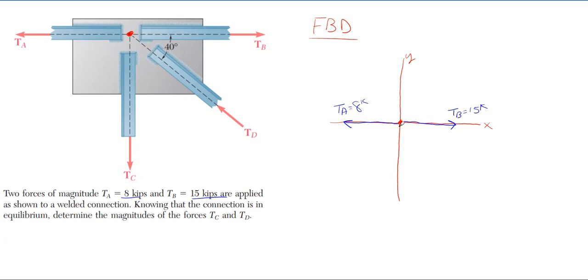Then we have our unknown TC, which is pointed directly downward along the y. And then we have TD, which is pointed up and to the left here. TD is unknown, and we have a 40 degree angle off the horizontal, which is 40 degrees off of the x-axis. And that's my free body diagram. I really don't need this first picture anymore, I'm just going to use my free body diagram because I have made everything more simple to look at and to use.